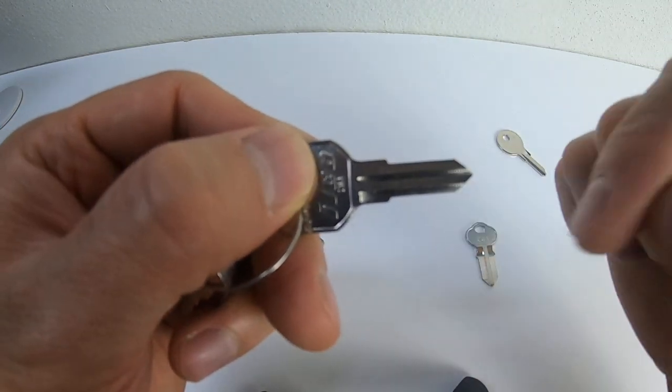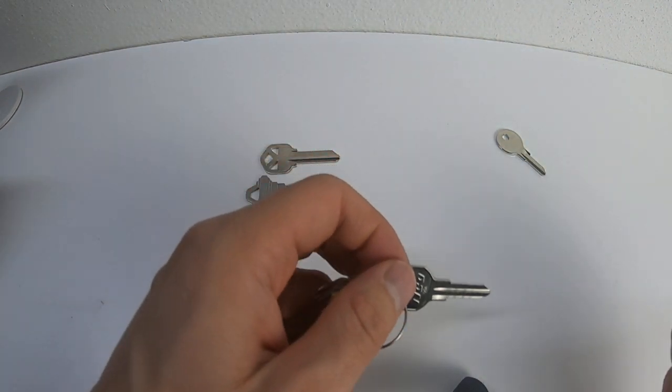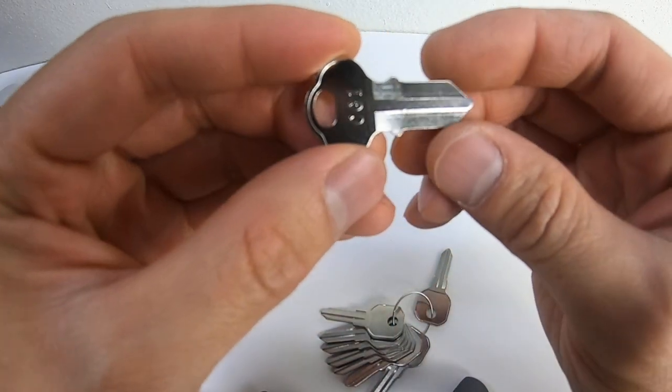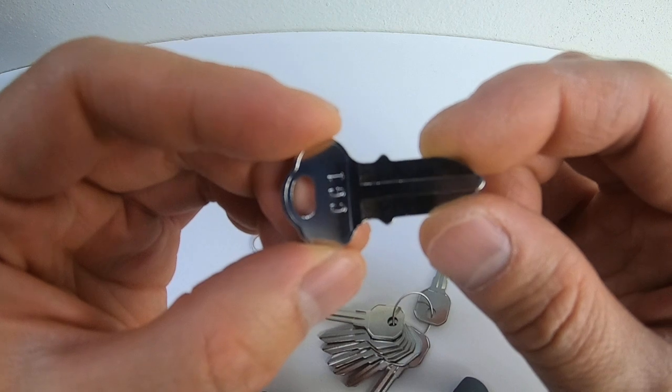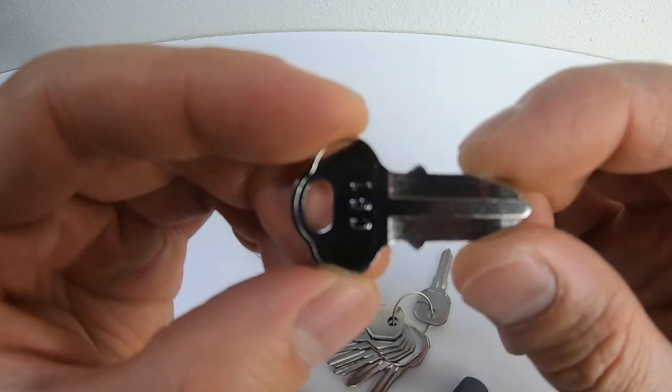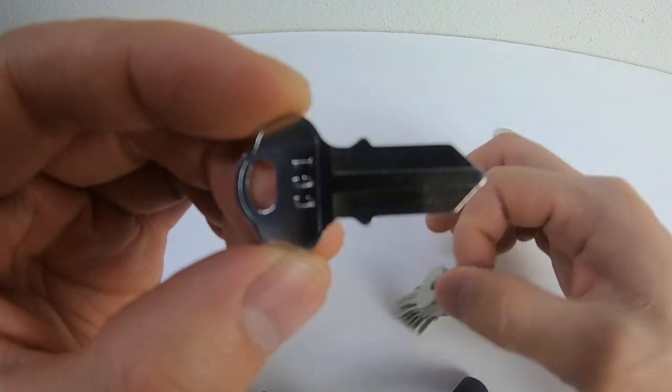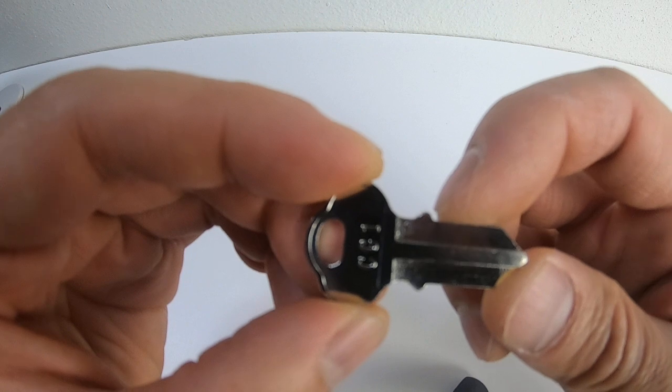The difference sometimes is most keys tend to have the same cuts on this side and also this side, so the pattern is symmetrical. They look the same on this side and also this side. There's very few instances where you're going to have different cuts on both sides, but this tends to be a key where that's the case. It's called a CG1.